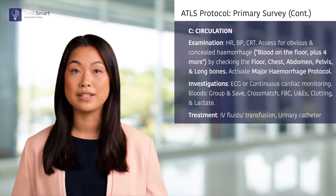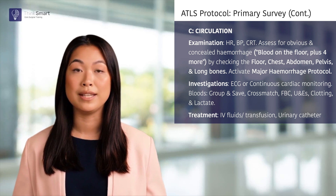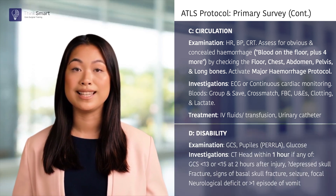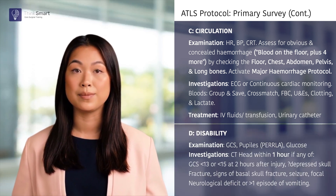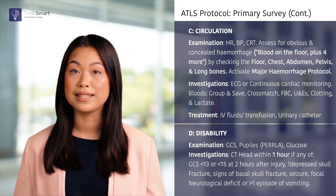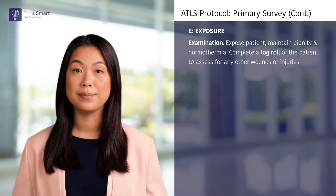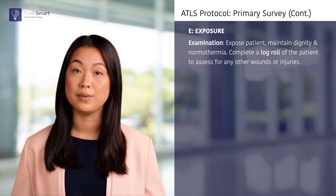I would start this patient on IV fluids and would ensure that a urinary catheter is inserted. Once the circulation is stable, I would move on to assess the patient's GCS, pupils, and glucose level and would request a CT head within one hour if any risk factors were identified. Finally, I would expose the patient maintaining dignity and normothermia, and would complete a log roll to look for any other wounds or injuries.